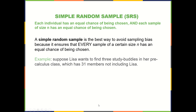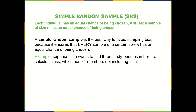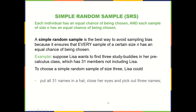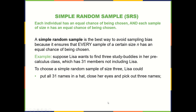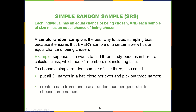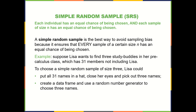Let's talk about what a simple random sample is in the form of an example. Suppose Lisa wants to find three study buddies in her pre-calculus class, which has 31 members not including herself. To choose a simple random sample of size 3, Lisa could put all 31 names in a hat, close her eyes, and pick out three names. That would be a situation where each classmate had an equal chance of being chosen, and also every possible collection of three classmates has an equal chance of being chosen. She could also use more sophisticated methods, creating a data frame and using a random number generator.